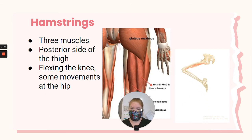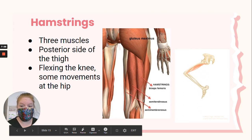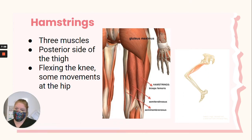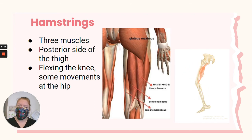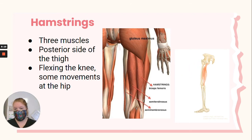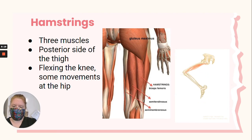And then we have the hamstrings. The hamstrings are three muscles located on the opposite side of the quadriceps — so it's on the posterior side of the thigh. The hamstrings are responsible for flexing the knee, so bending the knee, and also some of the movements at the hip as well. The hamstrings are made up of three muscles, but you don't have to learn the names of them — just that the group of three is the hamstrings, located on the posterior side of your thigh.